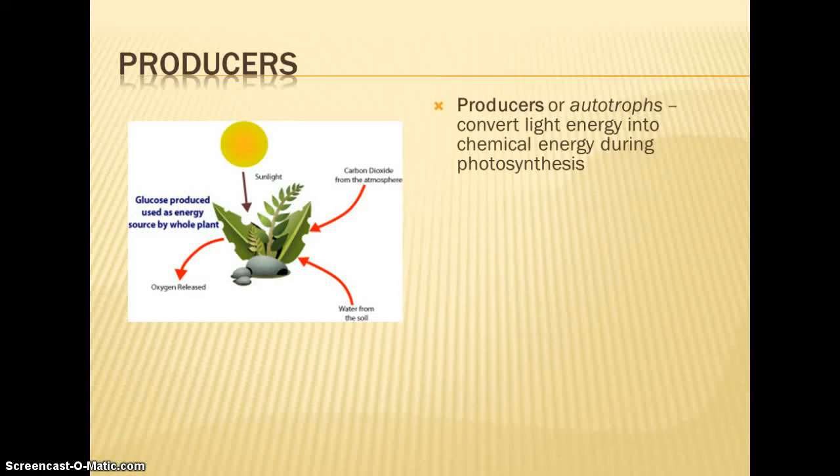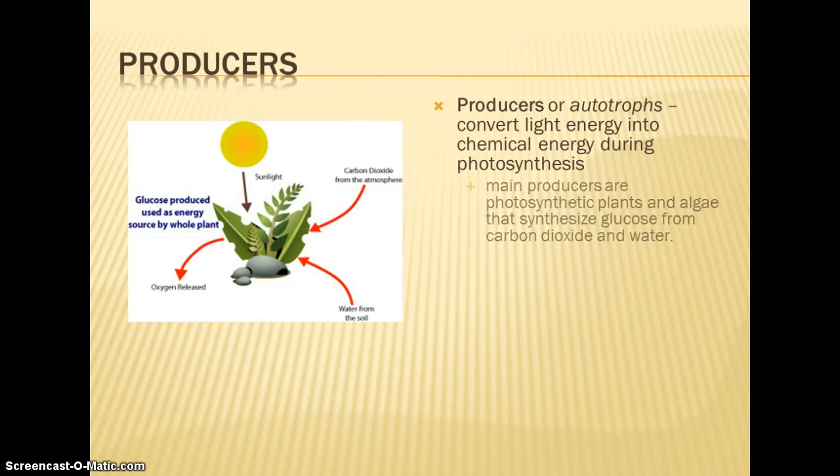Starting with our producers. Producers are autotrophs. Auto means self, so they're producing their own energy. They're taking sunlight, which is light energy, and converting it into chemical energy or glucose. Our main producers are the photosynthetic plants and algae, and they take that sunlight as the source of energy and synthesize glucose. The other inputs to that are carbon dioxide and water.